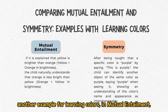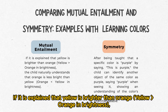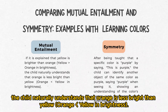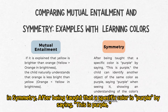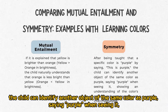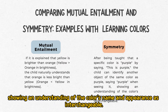Another example for learning colors: in mutual entailment, if it is explained that yellow is brighter than orange, the child naturally understands that orange is less bright than yellow. In symmetry, after being taught that a specific color is purple by saying 'this is purple,' the child can identify another object of the same color as purple, saying 'purple' when seeing it — showing an understanding of the color's name and appearance as interchangeable.